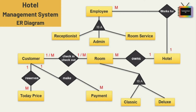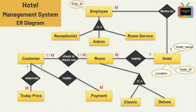Now let's look at the attributes. For the entity hotel, I am adding three attributes: hotel ID, hotel name, and location — and hotel ID is the key attribute. For the entity employee, the first attribute is employee ID, which is the key attribute.